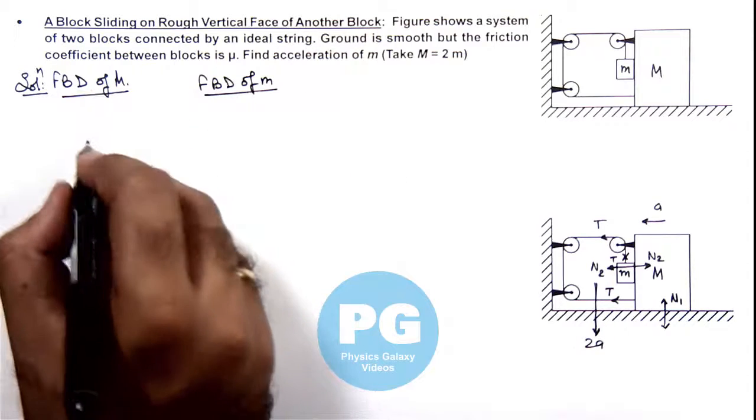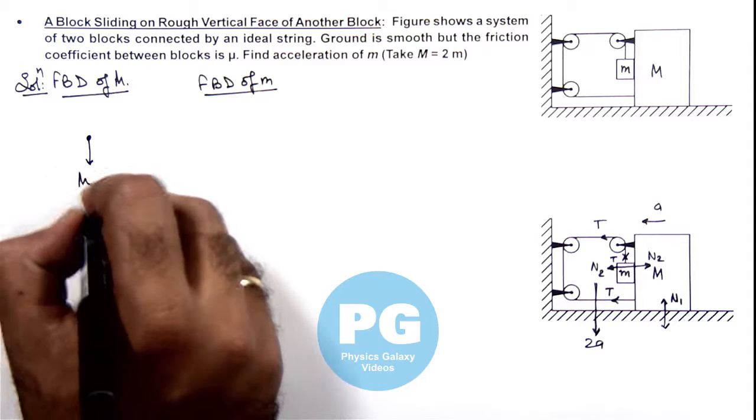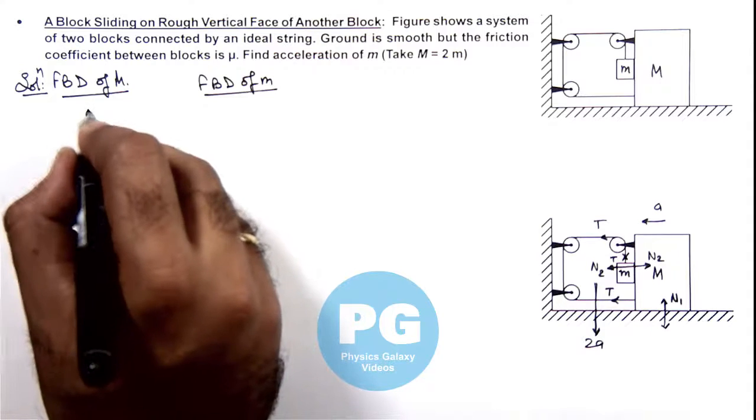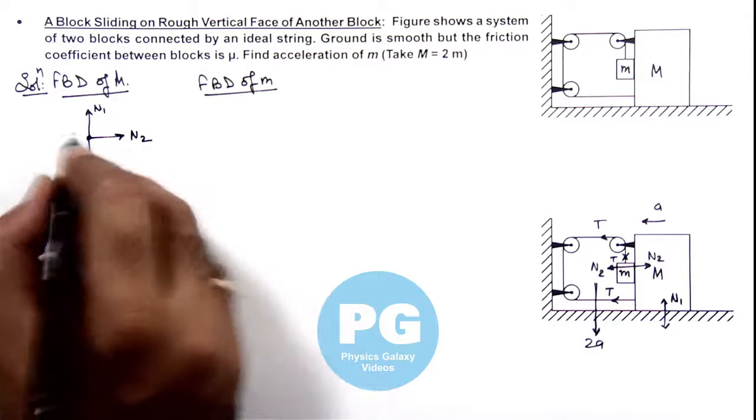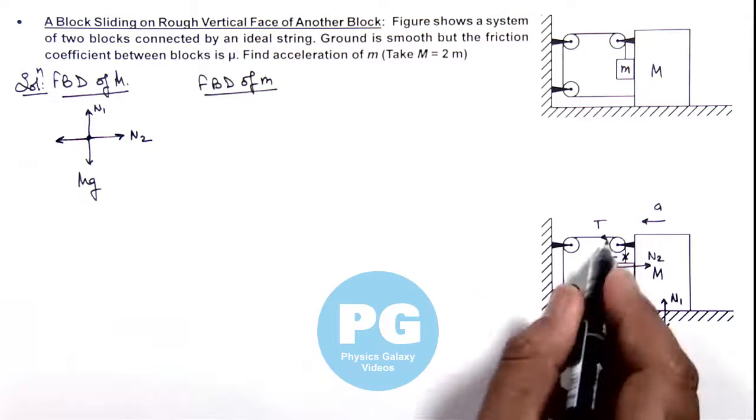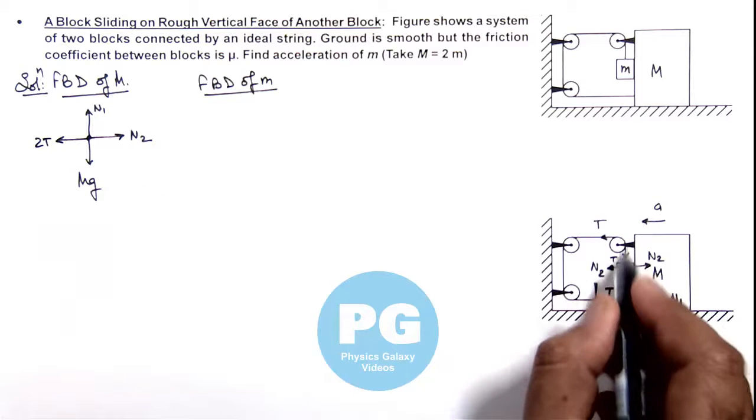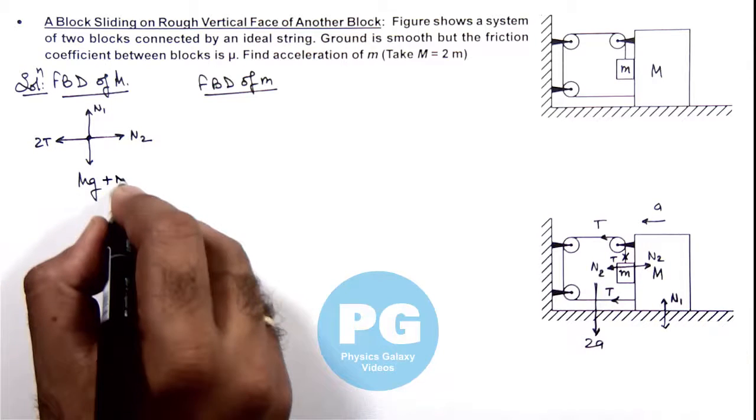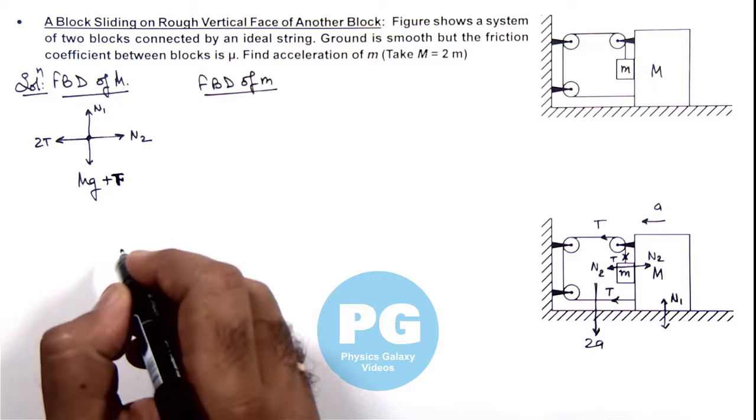Here we can see in case of capital M, downward is its weight capital Mg. Upward is the normal reaction N1, toward right it is N2. Toward left, these two tensions are acting on it which is 2T. One tension on this pulley is in downward direction which can be taken here, T.